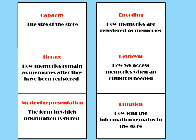In order to understand this theory of memory, it's important that you understand the key words. Capacity refers to the size of the memory store. Encoding is how memories are registered. Storage refers to how they remain as memories after being registered. Retrieval is how we access memories when we need to remember something. The mode of representation is the format in which information is stored, and duration is how long information will remain in the store.